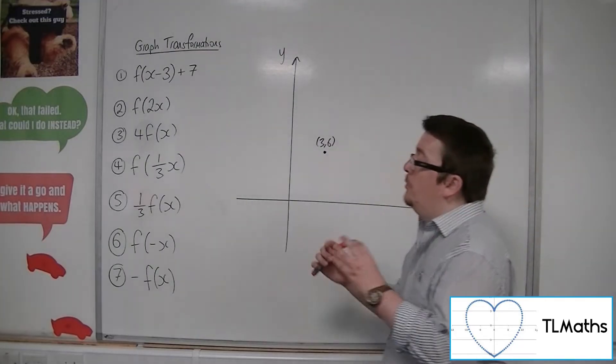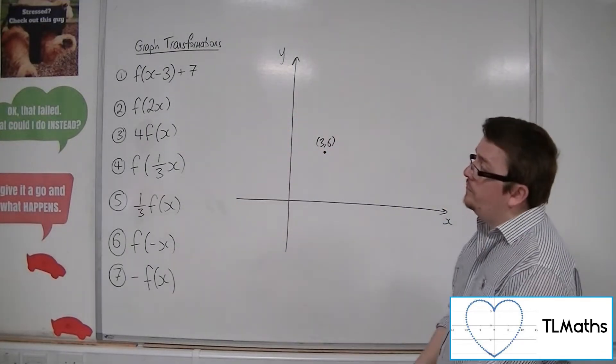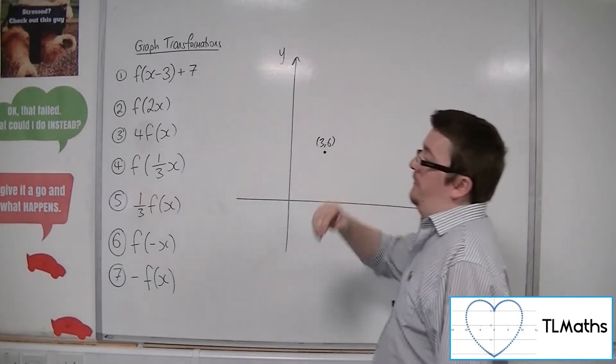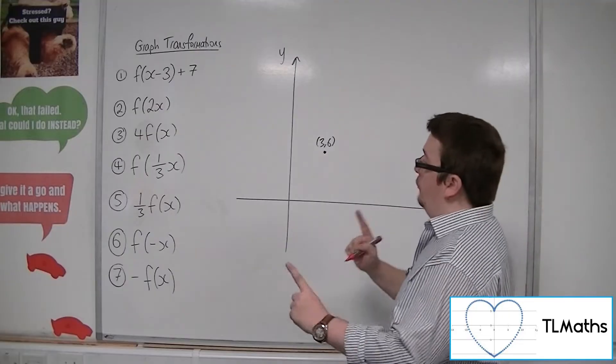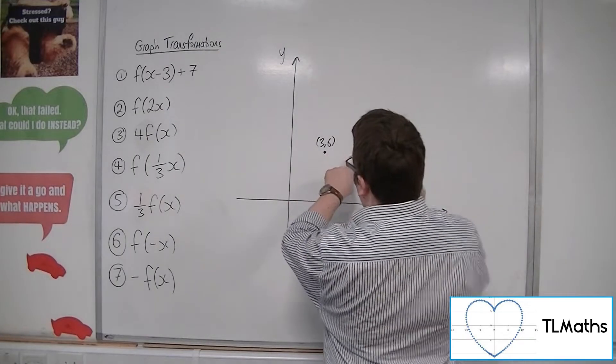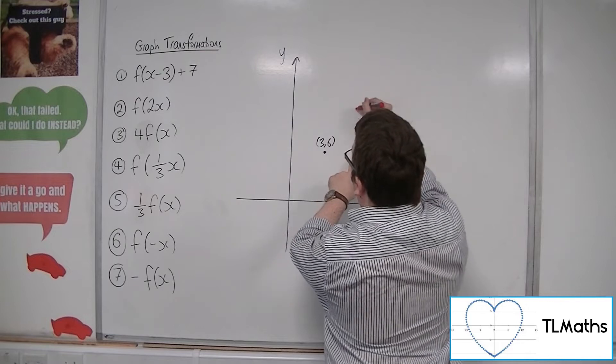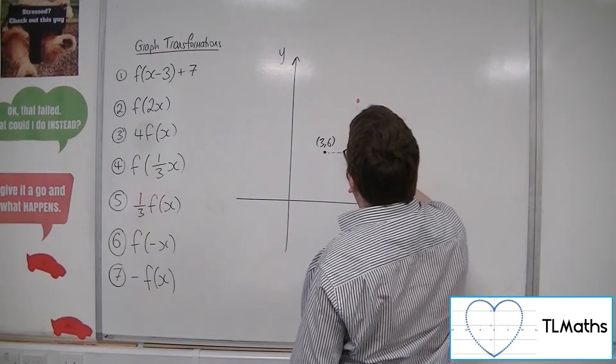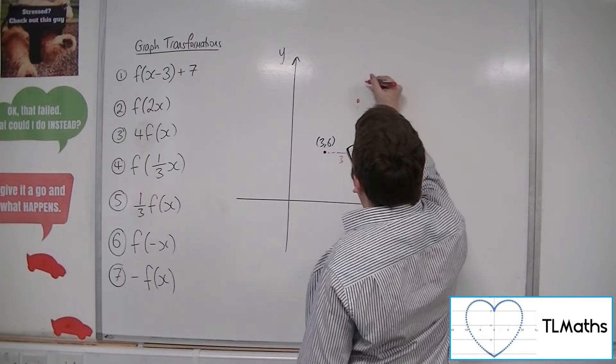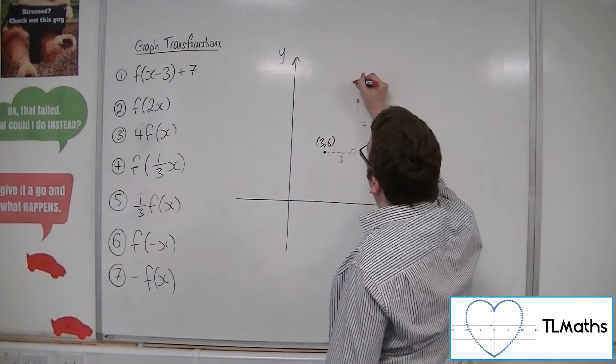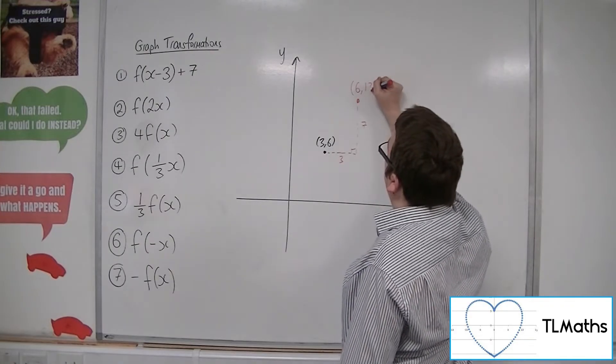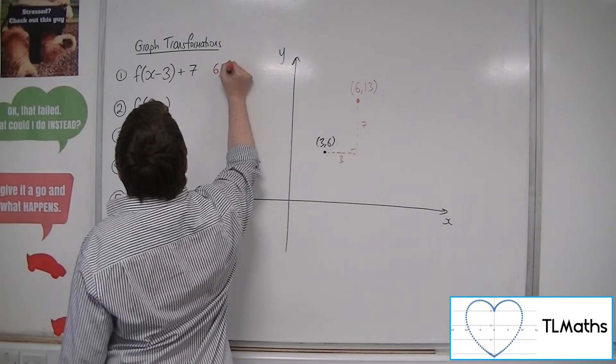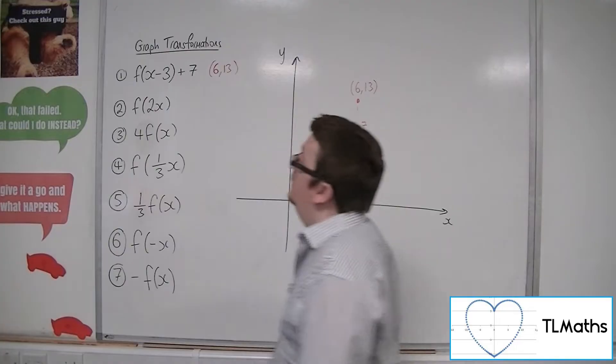So we should now be able to identify what each of these transformations are. This first one, for example, is a translation by the vector (3, 7). So that will move the point 3 to the right, and then 7 up. And so this new point will be 6, 13. And that would be the new coordinate for number 1.